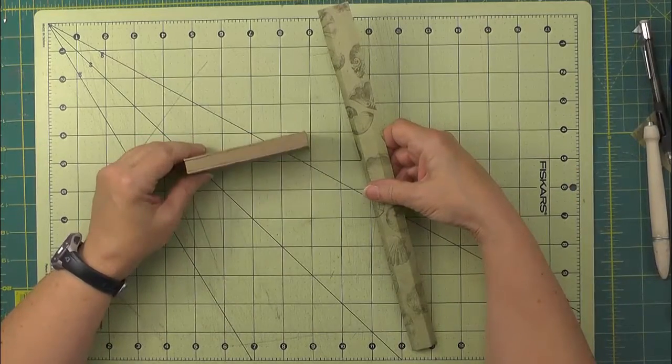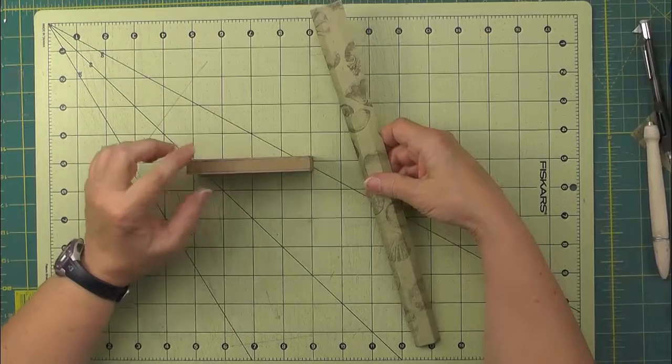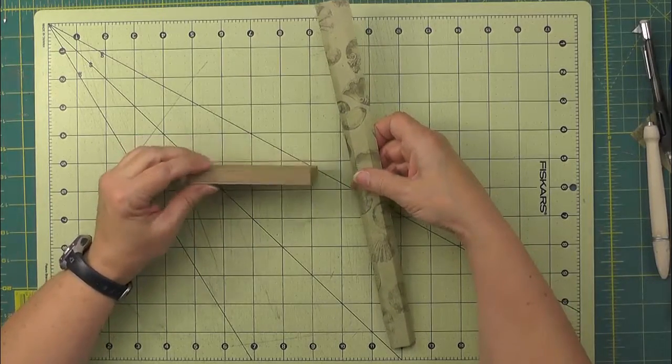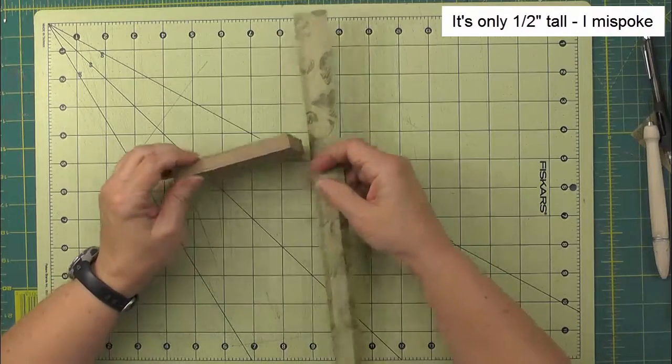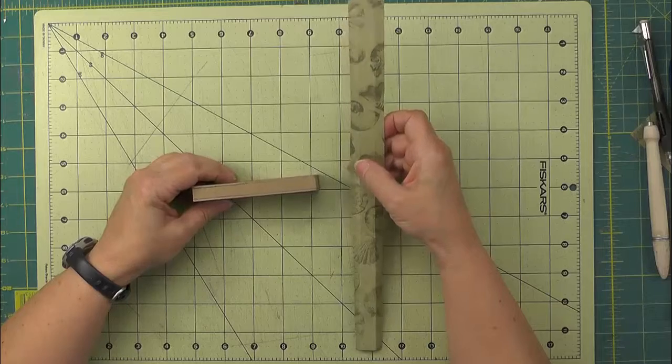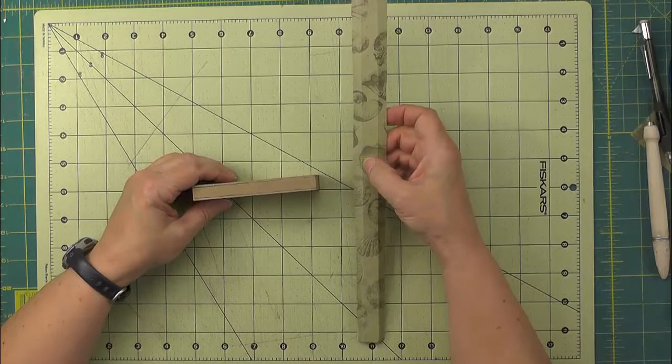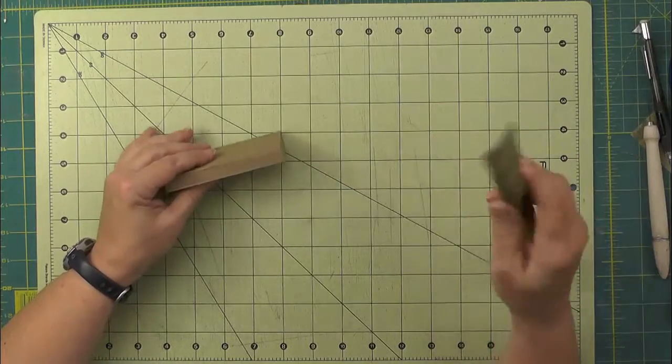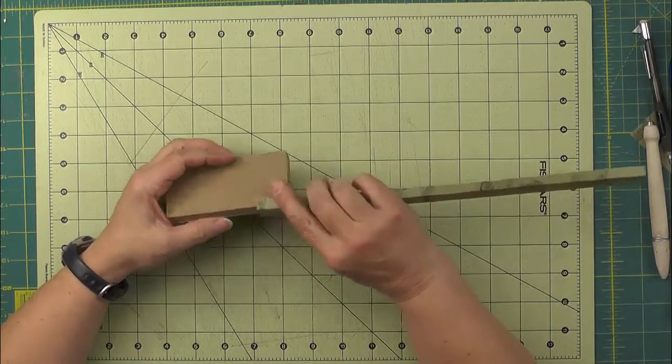So now that our little landing is dry, we can cover the edges with some patterned paper. Because this is an inch tall and I'll have 3 eighths on the top and the bottom, I've cut a piece of patterned paper an inch and a quarter wide, scored it at 3 eighths and 7 eighths, and now I'm going to wrap it around the edge. A piece of 12 inch should just fit.